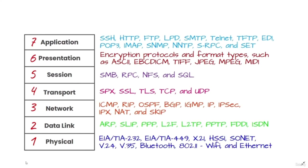The third layer of the OSI model is the network layer. It is responsible for receiving frames from the data link layer and delivering them to their intended destinations based on the addresses contained inside the frame. The network layer finds the destination using logical addresses such as IP addresses. At this layer, routers are crucial components used to route information between networks.